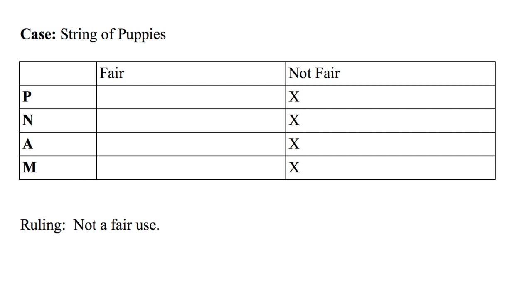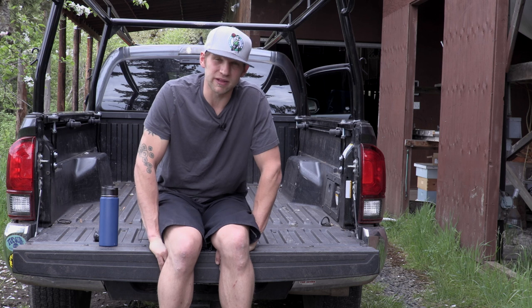Nature of the original: is it creative, or is it a work of fact or non-fiction? It's barely creative, but Art Rogers got the people to pose and took the picture — it's creative, therefore not fair. Amount used: all of it, in the heart of the work — not fair. Market harm: markets are probably very different; however, because it's a derivative, he infringes on Art Rogers' ability to license the photograph to be made into a derivative sculpture — not fair use. The court said it's not a fair use: it's substantially similar, completely derivative and not transformative, and infringed on the market.